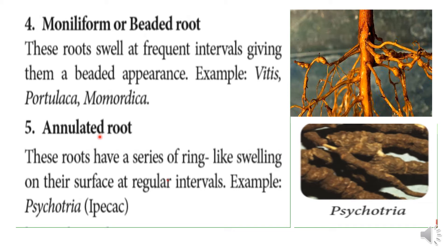Next, Annulated Root. Annulated roots are a little variation of moniliform. There is a series of ring-like swellings on the surface at regular intervals. The roots look a little different from moniliform. For example, Psychotria, the wild coffee plant. These are storage roots.